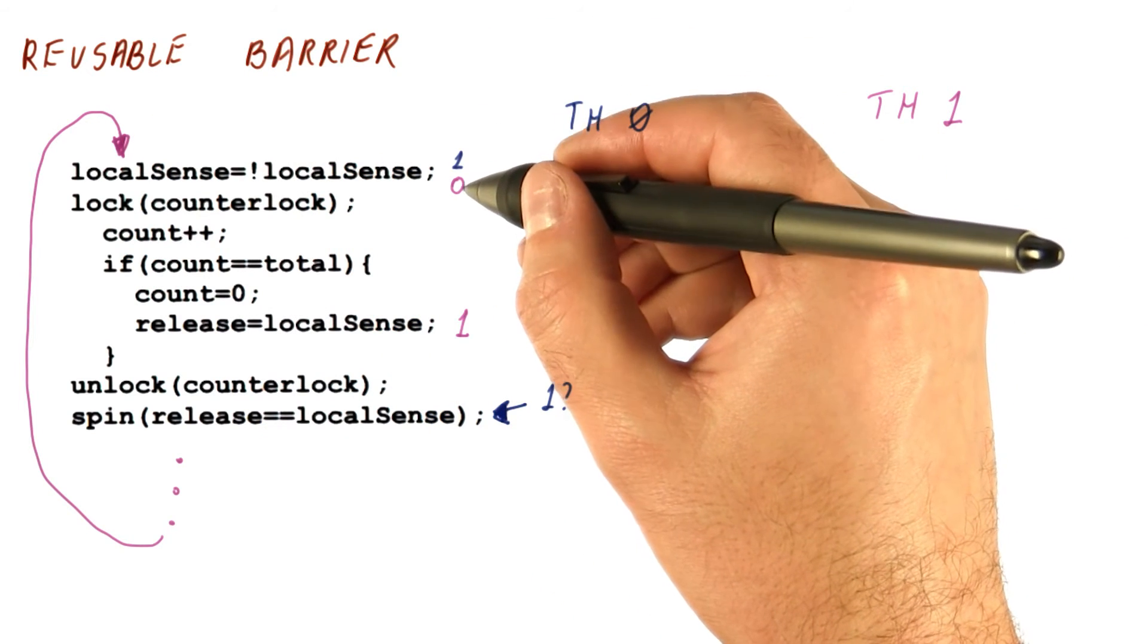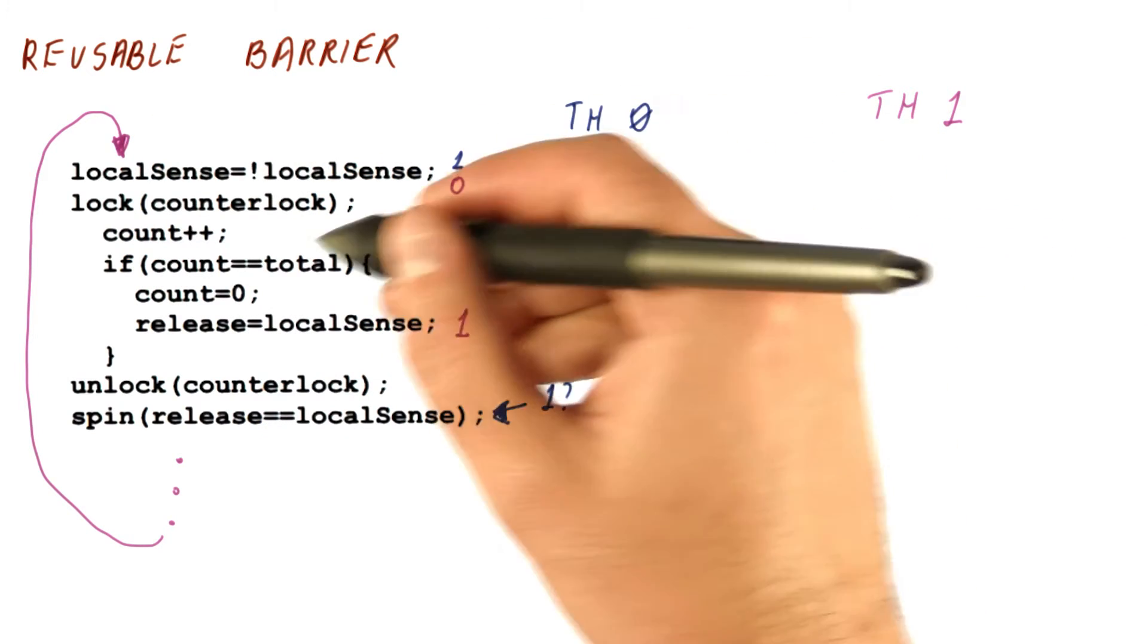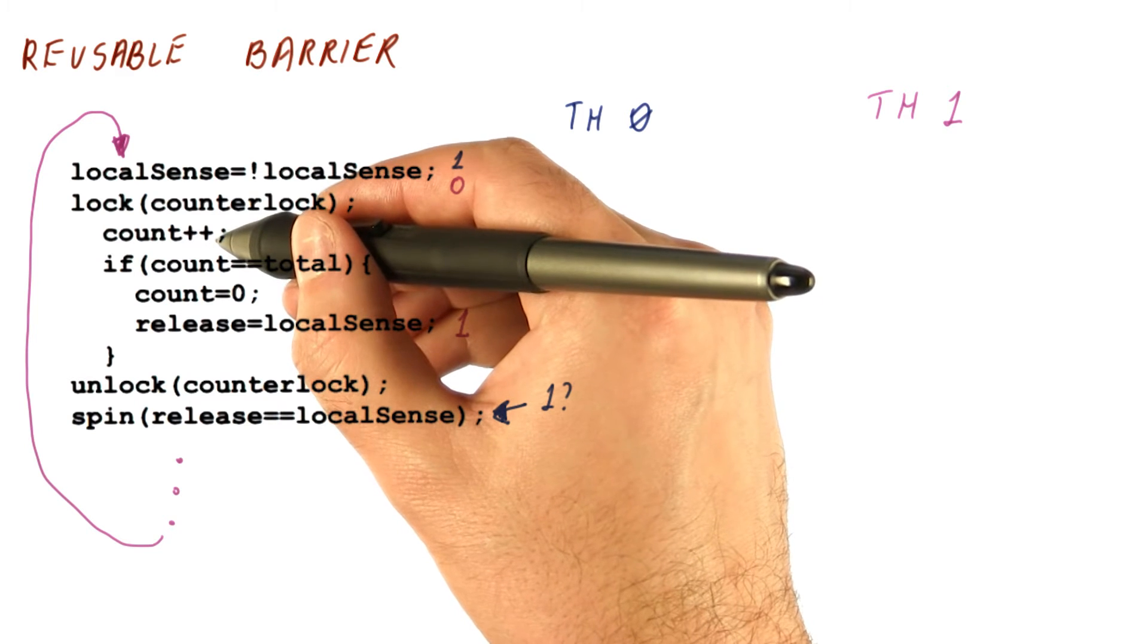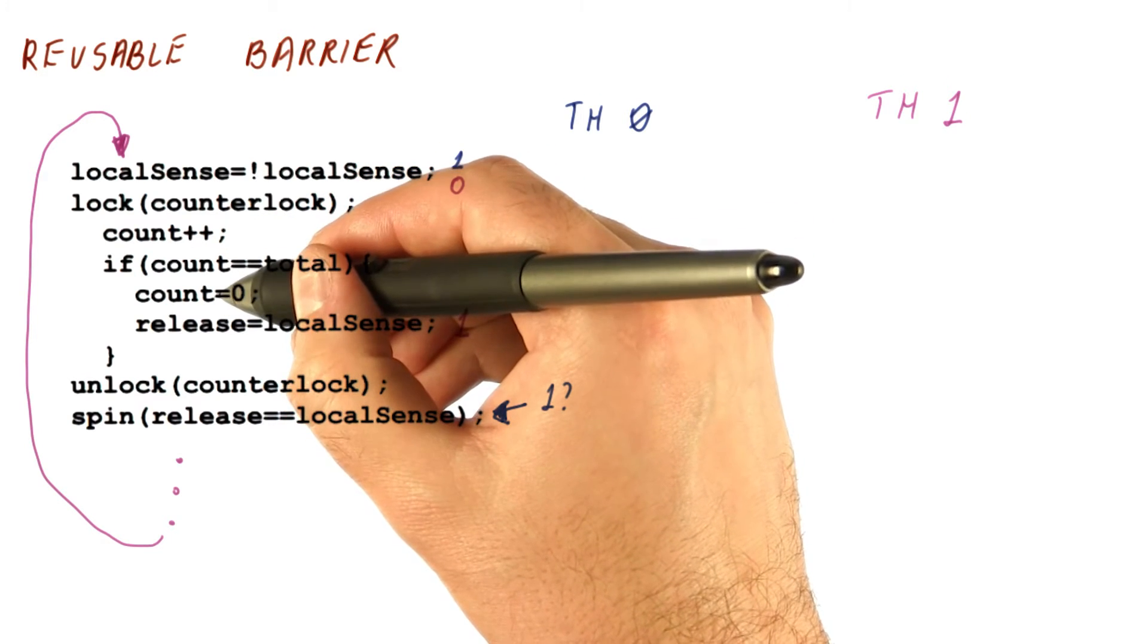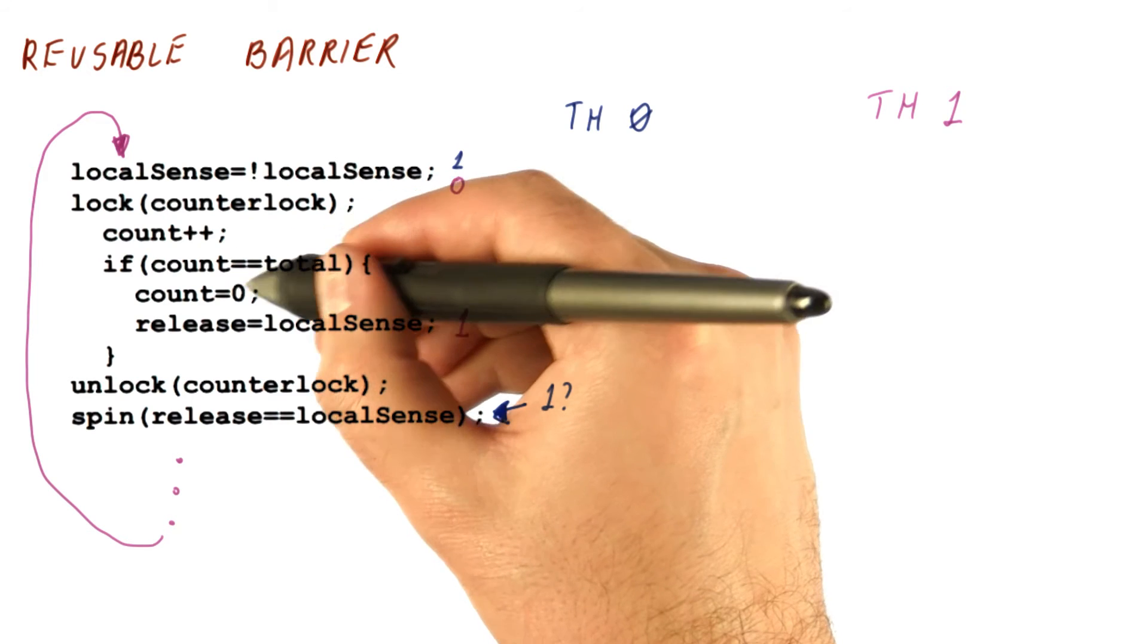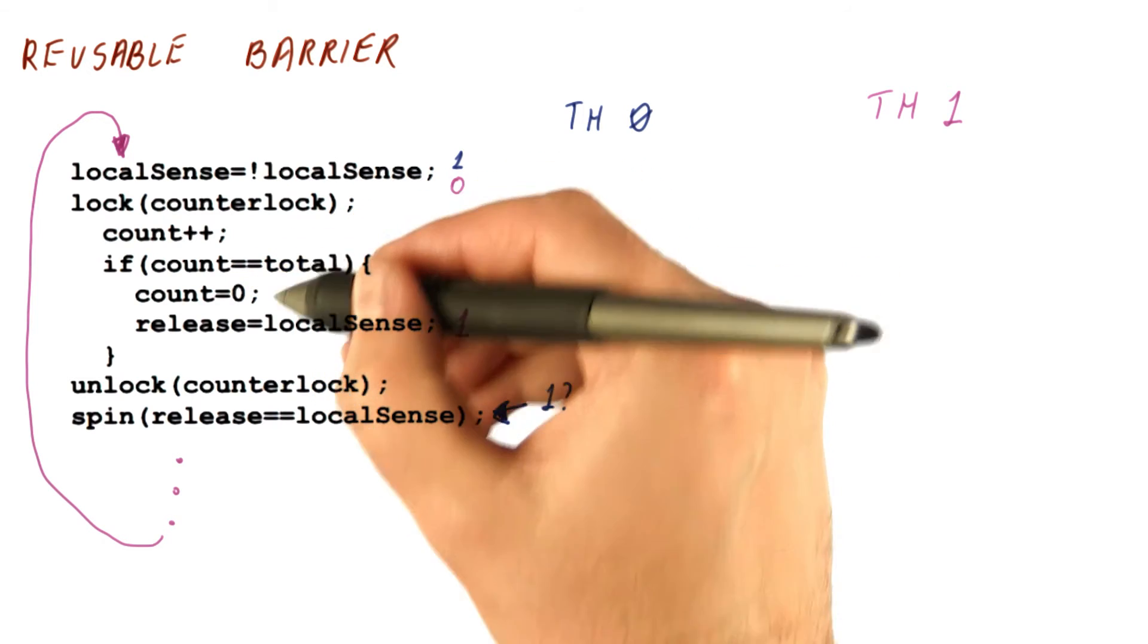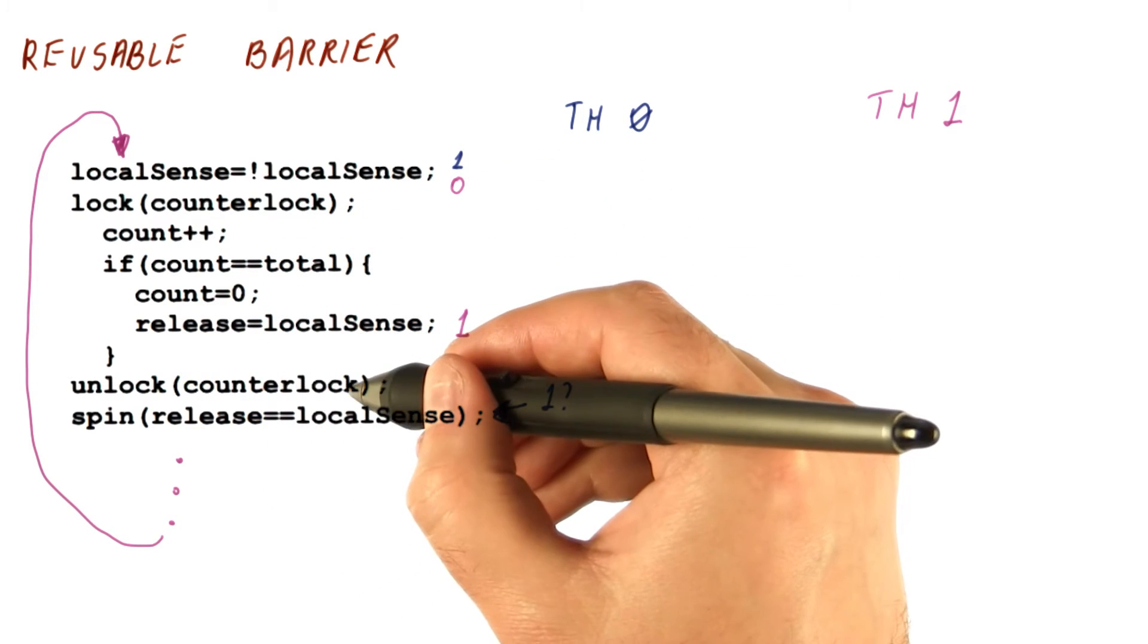It now flips its own local sense to zero, increments the count to one, because we reset the count when we were releasing the first instance. Checks the count, sees that it is one, doesn't do this. Thread one unlocks the lock.